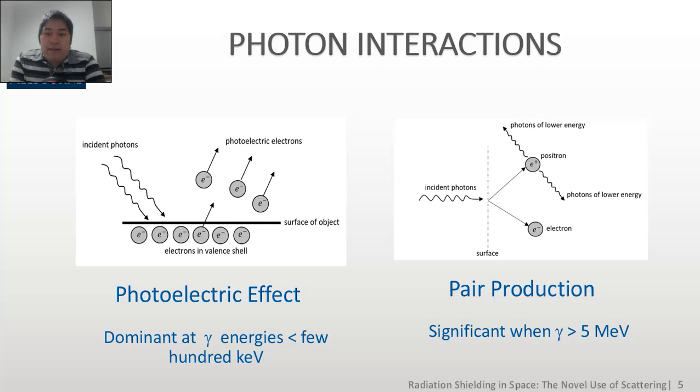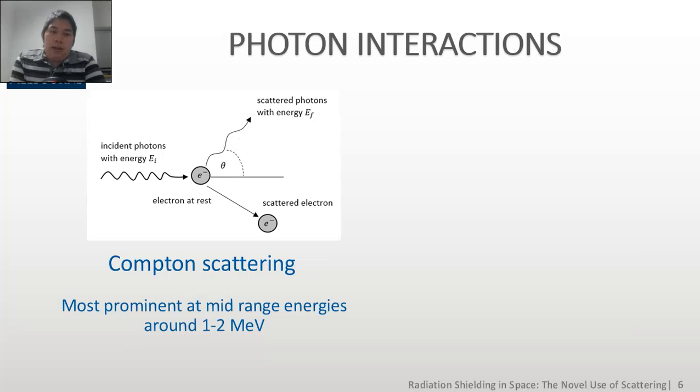Second, we have the pair production, where an incident photon decomposes into two particles upon striking a metal surface, and produces a negative particle, an electron, and a positive particle, which is highly unstable, known as a positron, and instantaneously decomposes into two photons of lower energy. And the energy of the incident photons is typically in the gamma range and is greater than 5 MeV.